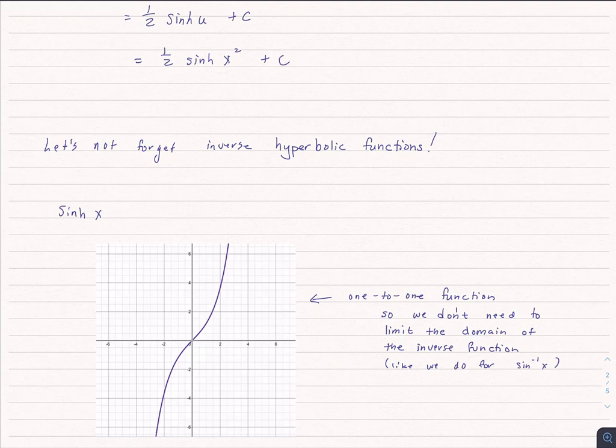This is a one-to-one function. Sine wasn't. We had to worry about the domain of inverse sine, and that's the thing that everybody trips up on. But we don't have to worry about that in the case of hyperbolic sine because it is already a one